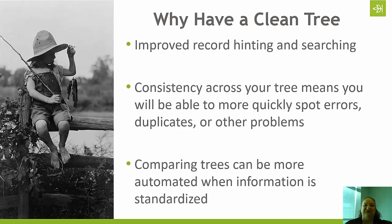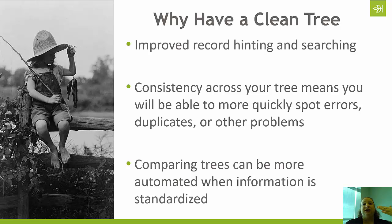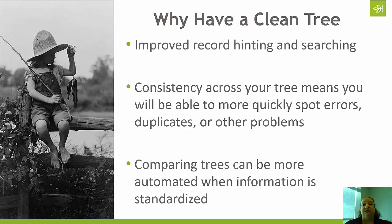Another reason it's really important — and becoming even more so — to have a clean tree is that comparing trees can be more automated when information is standardized. This is particularly important when we talk about DNA. One of the features is a match list — we compare your DNA to the now 3 million people and growing in the database, and we then compare your tree to their tree to give you hints about common ancestors. If you've got a dozen different names and birth dates and they have a similar situation, comparing that data is not going to happen. So the cleaner your data, the more likely you are to utilize those automated features.